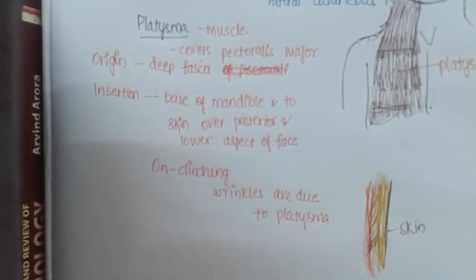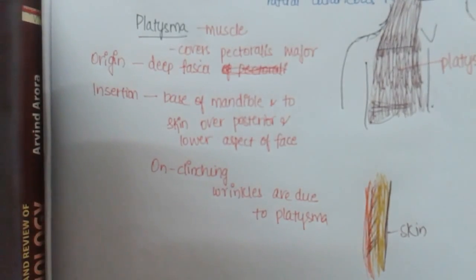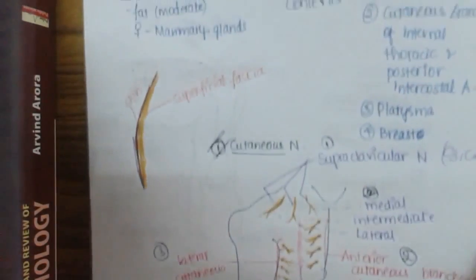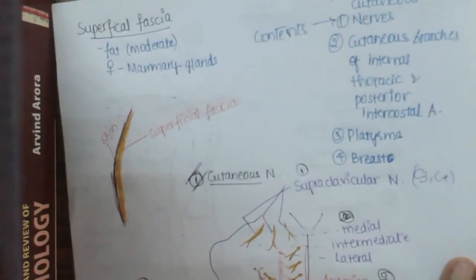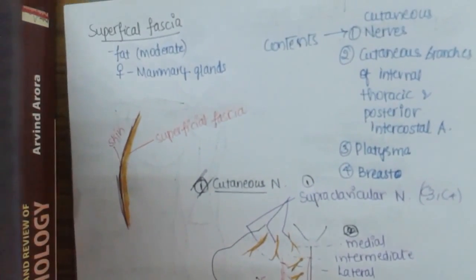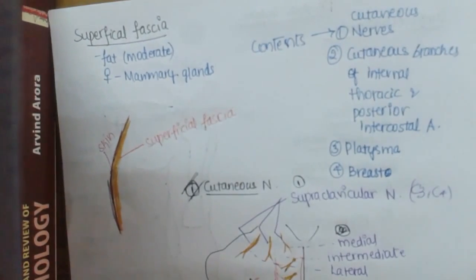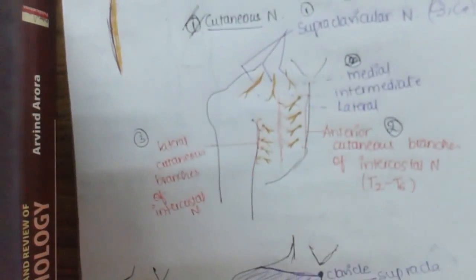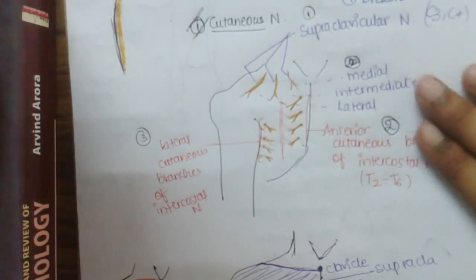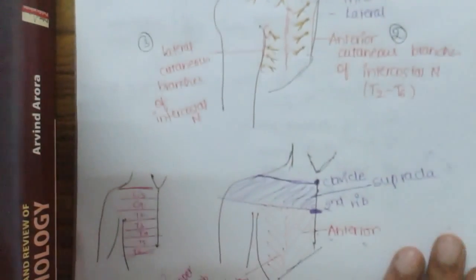That is the final structure I wanted to explain today. Tomorrow I will explain the breast and the mammary gland — it is a really big topic so I will try to go a little faster. To summarize today's class on superficial fascia: we covered its contents — cutaneous nerves, cutaneous vessels, and the platysma muscle.